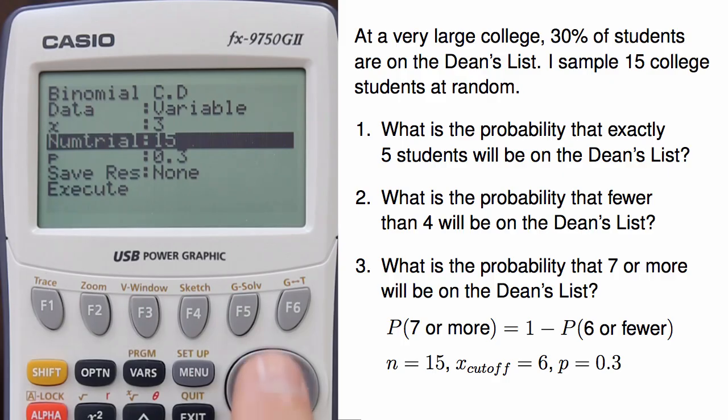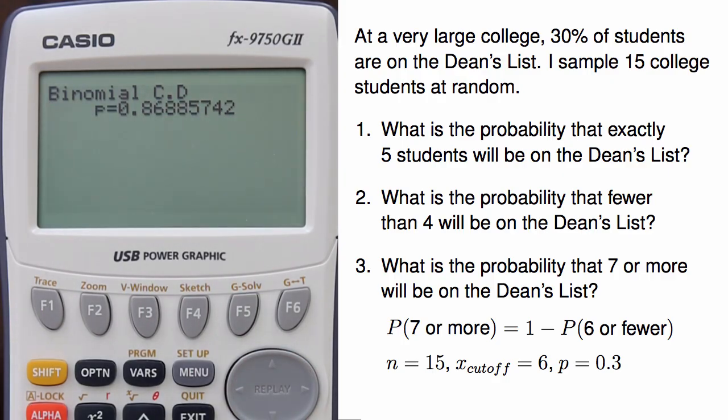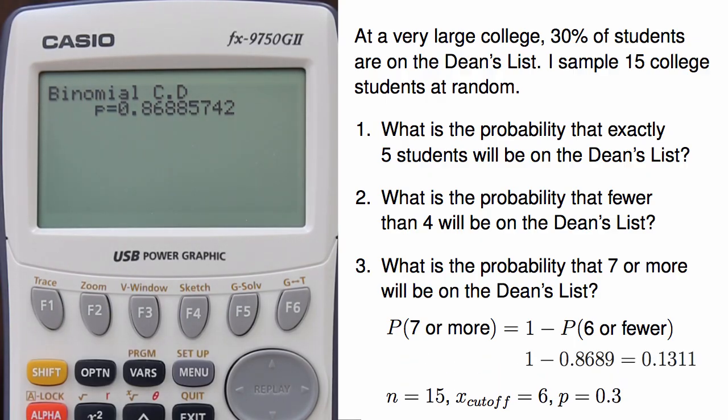Exiting back to the binomial cumulative distribution, I can change the 3 to a 6 and hit Execute, 0.8689. And again, this is the lower tail. To get the upper tail, I take 1 minus 0.8689, which is 0.1311.